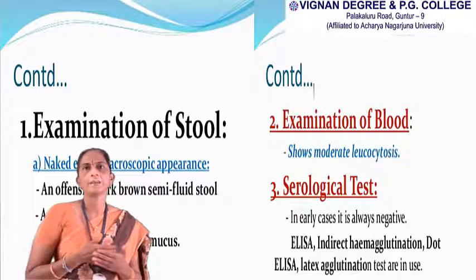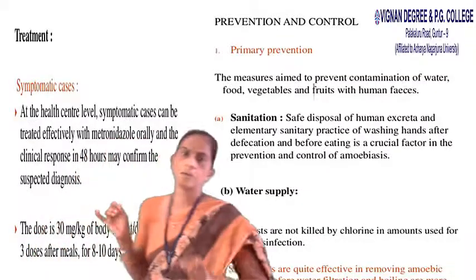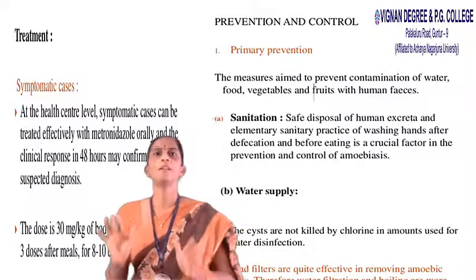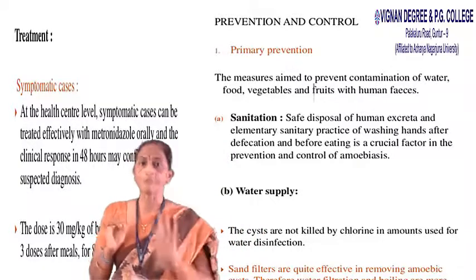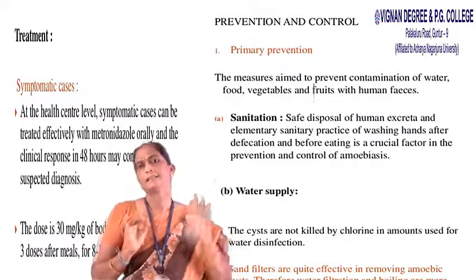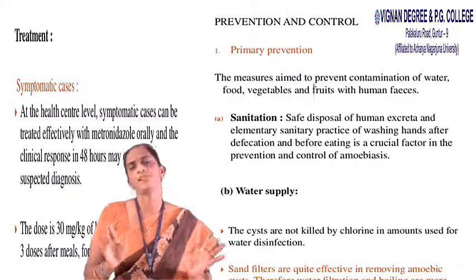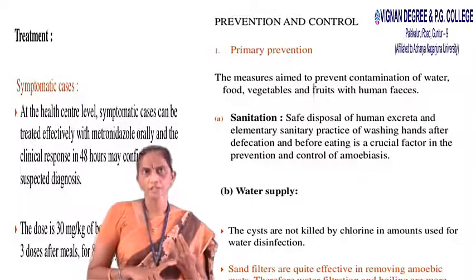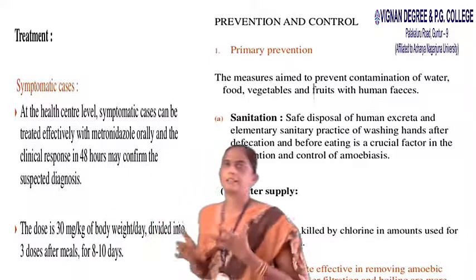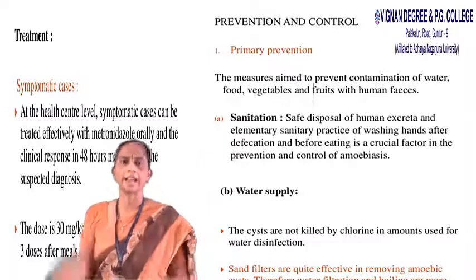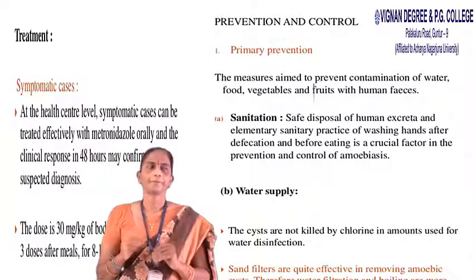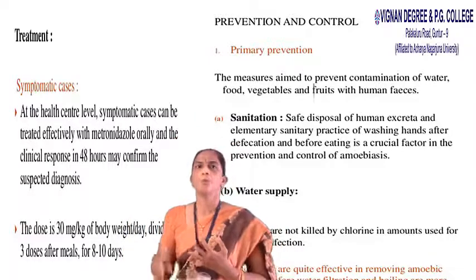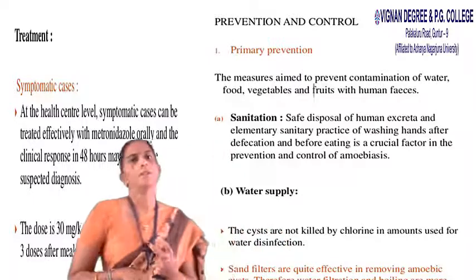The main treatment used is Tinidazole, given in three doses after meals for eight to ten days. There is no vaccination for this disease, so we have to prevent it. Prevention includes proper washing of vegetables and fruits, ensuring the water supply is not contaminated with human feces, proper sanitation, and water treatment methods such as chlorination, boiling of water, and clinical water treatment.